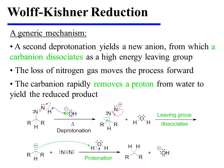A second deprotonation yields a new anion. A carbanion dissociates from that anion as a high-energy leaving group. Although the dissociation of a carbanion seems quite unfavorable, it is the loss of nitrogen gas, which is irreversible, that pushes the process forward. The carbanion rapidly removes a proton from water to yield the reduced product, bearing a methylene or CH2 group where the carbonyl once was.